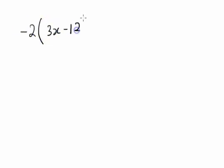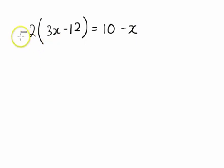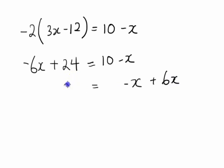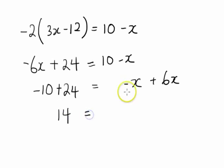Another example: say we have negative 2 times bracket 3x minus 12 equals to 10 minus x. We open the brackets: negative 2 times 3x gives negative 6x, and negative 2 times negative 12 gives positive 24, equals 10 minus x. Bringing negative 6x over gives 5x on the right, and bringing 10 over gives 24 minus 10, which is 14. So x equals 14 over 5. To be continued.